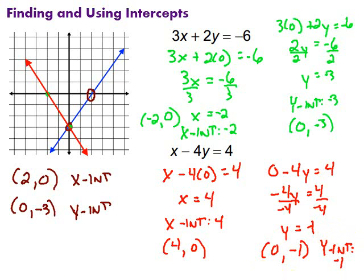So I can go ahead and graph that. My x-intercept, 4, 0. So I would go over 4, 1, 2, 3, 4, up and down 0, so that would put me right there. And then my y-intercept being 0, negative 1, that would be right there. And then I can draw my line connecting those two points. Something like that. There it is.